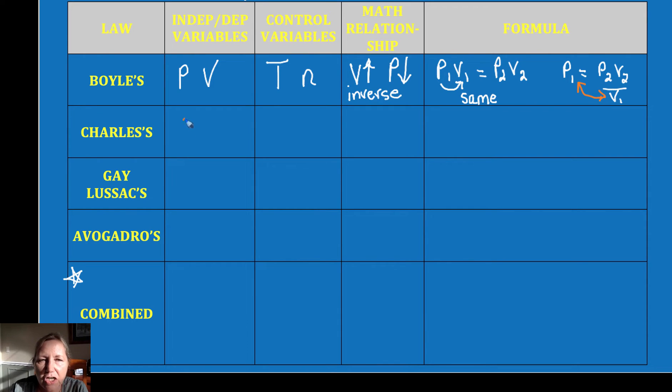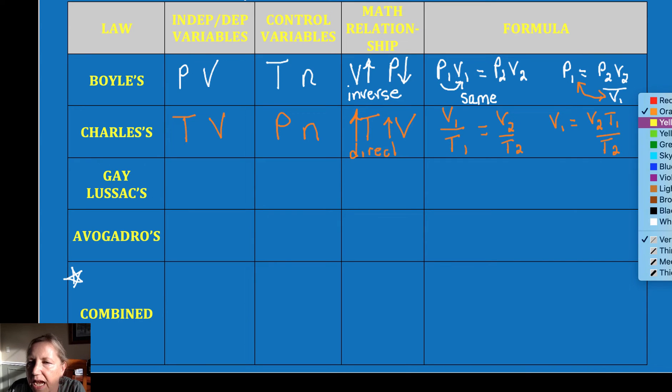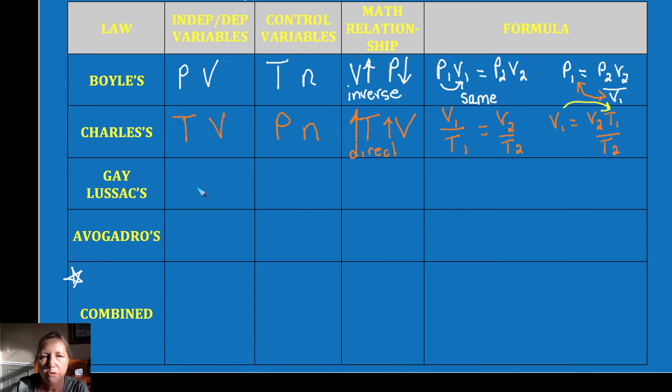Charles's Law. Charles watches TV. So he studied temperature and volume and therefore kept pressure and moles constant. Now if you increase your temperature, I think that might be intuitive that you are going to increase your volume. The molecules will move faster, push against the sides of the container and push it out and increase the volume. More on that later. And so this is a direct relationship and we're going to write V1 over T1 is equal to V2 over T2. I'll again solve for V1 and I get V2 times T1 over T2. So now I think it's a little clear you see that direct mathematical relationship.